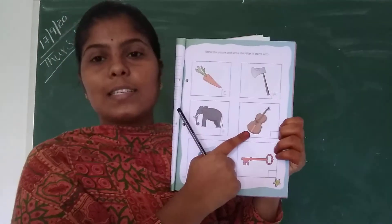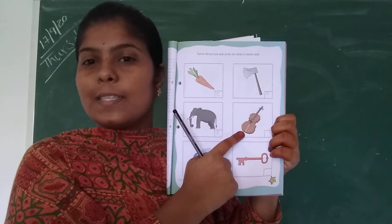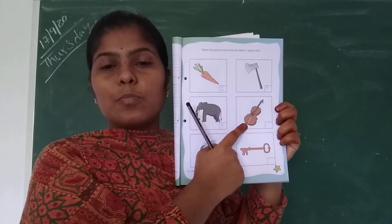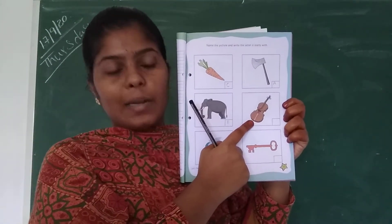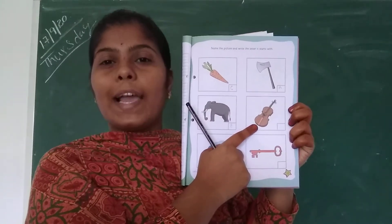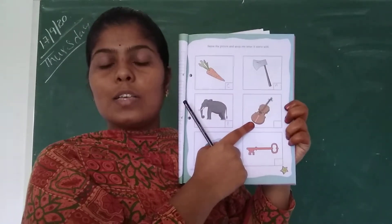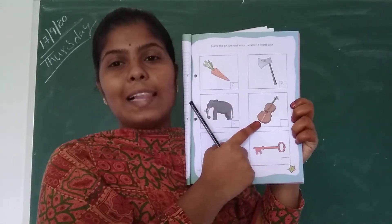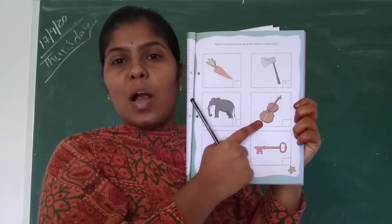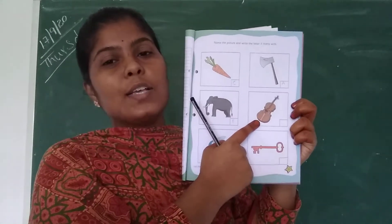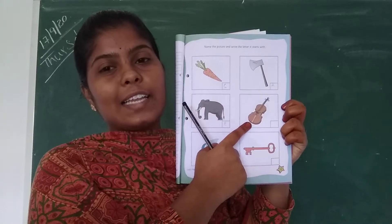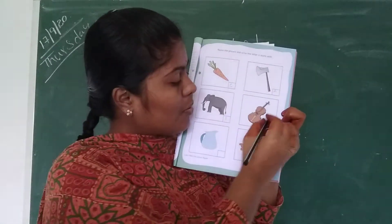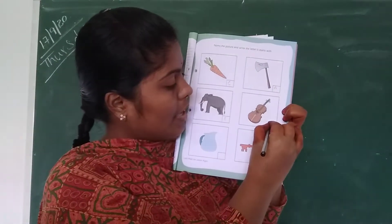What is this instrument? This is a white music instrument. So what is the name of this music instrument? It is violin. What is the spelling of violin? V-I-L-I-O-N. So what is the starting letter of violin? V. Write V letter here.